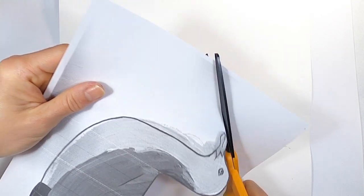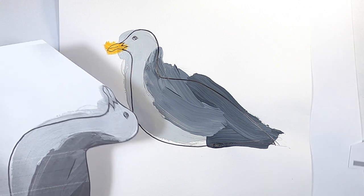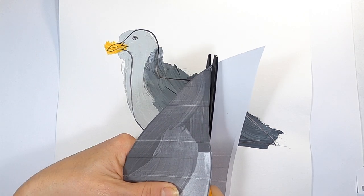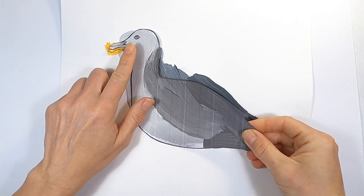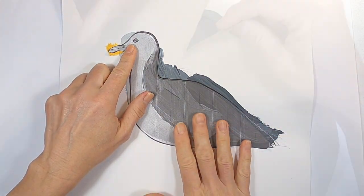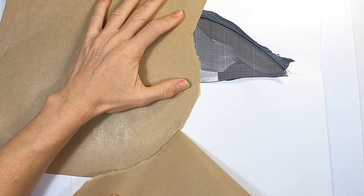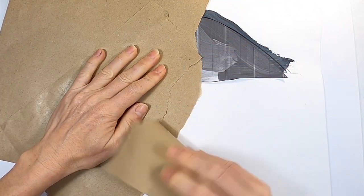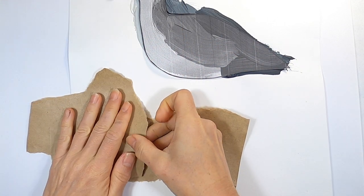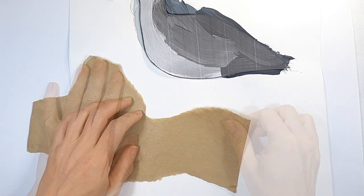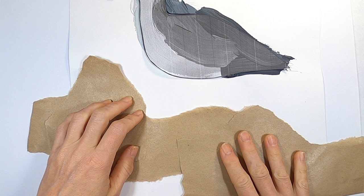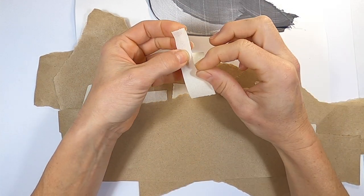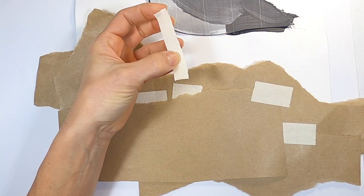To make the stencil for the silkscreen, you need a copy of the bird. The copy needs to be cut out neatly around the edge. Now tear up some scrap paper and arrange it along the bottom of the page so that it looks like rocks. Then tear some masking tape into strips like this.